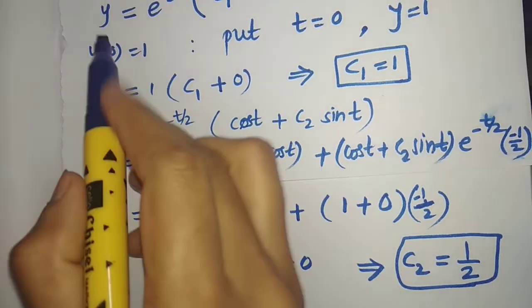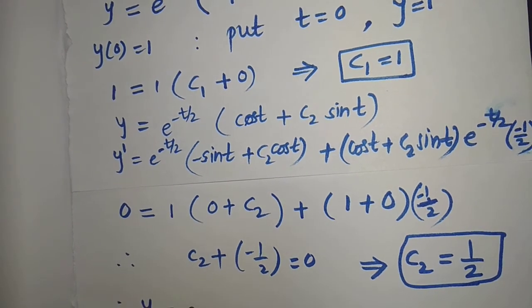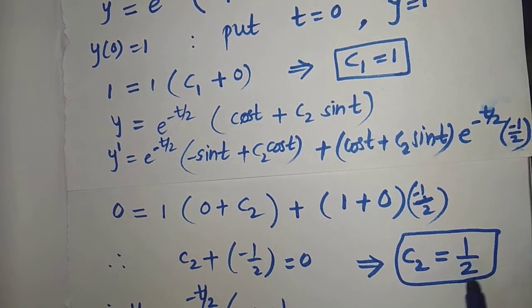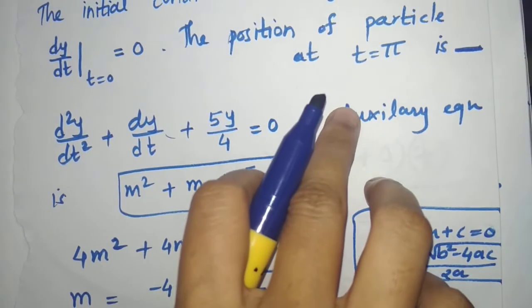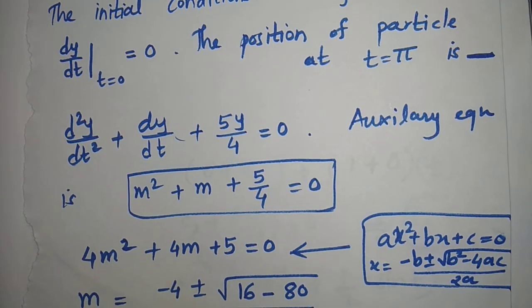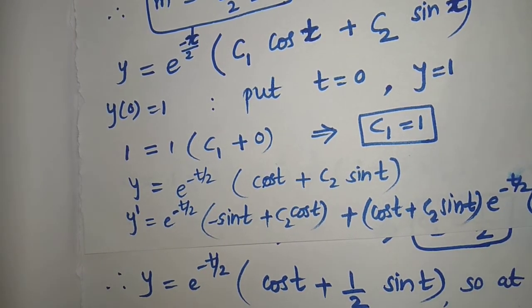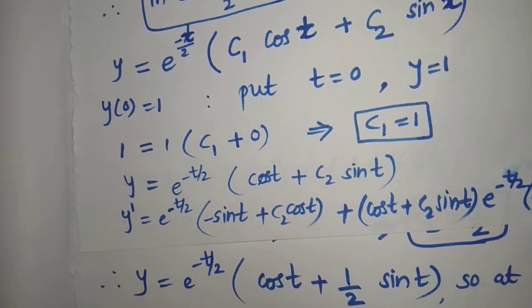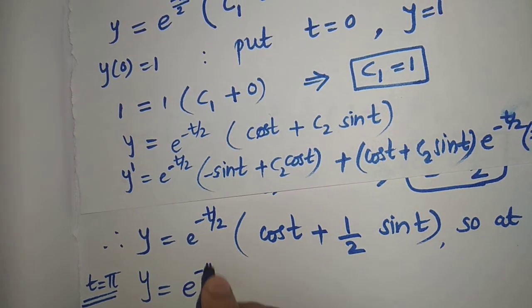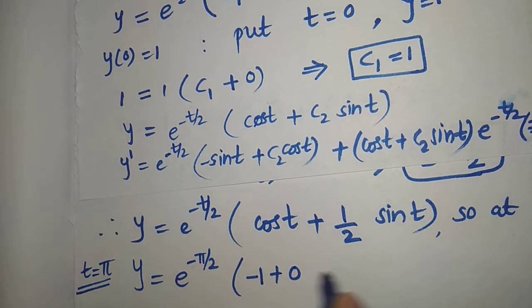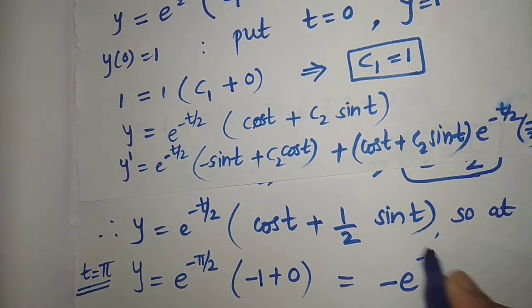Putting c1 equal to 1 and c2 equal to one-half into the solution: y equal to e raised to minus t/2 into bracket cos t plus one-half sin t. At t equal to pi: cos pi is minus 1 and sin pi is 0, so the answer is y equal to minus e raised to minus pi by 2.